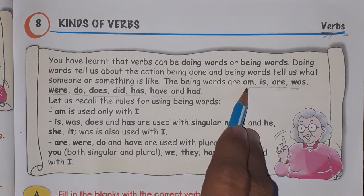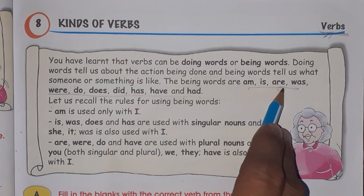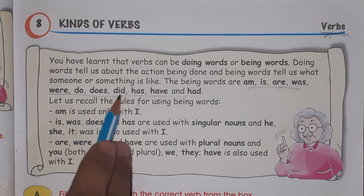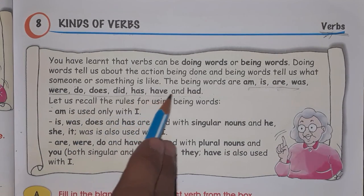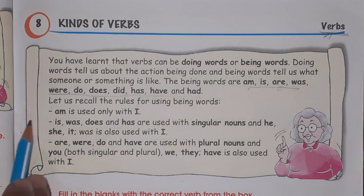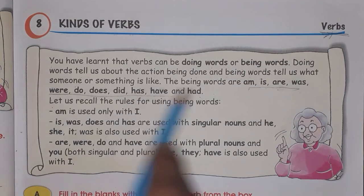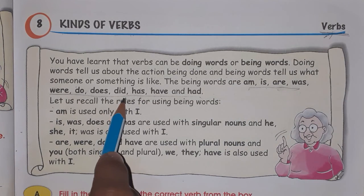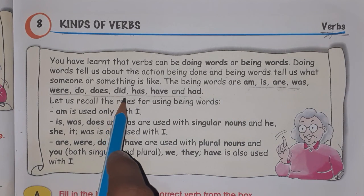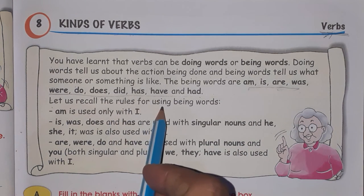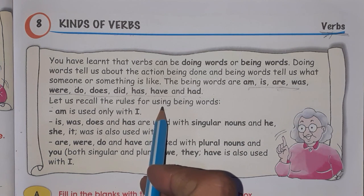The being words are: am, is, are, was, were, do, does, did, has, have, and had. All these are the being words. According to the sentence or according to the tense, we use these words.